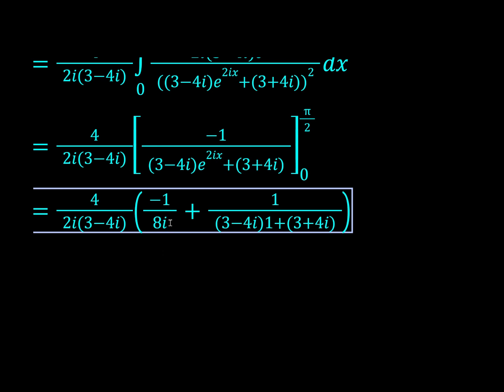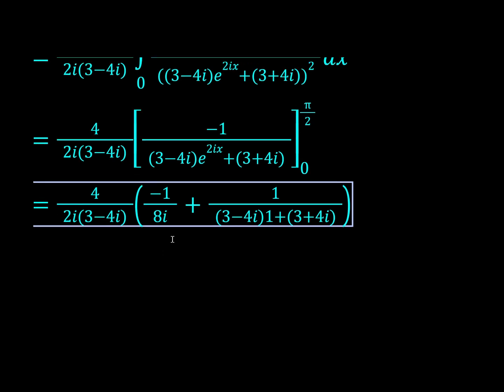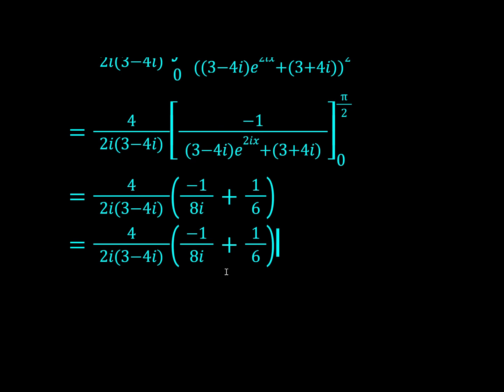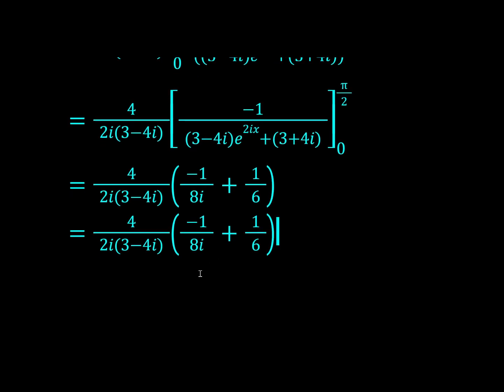So all together we have 8i in this denominator. And over on this side, we have 3 - 4i + 3 + 4i, and that would just become 6. And now maybe we should combine these fractions together. So now we just combine it to get (4i - 3)/24i.